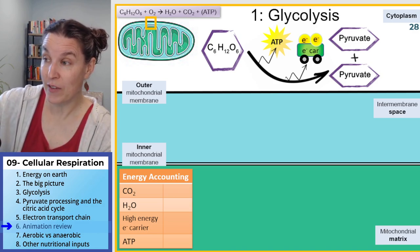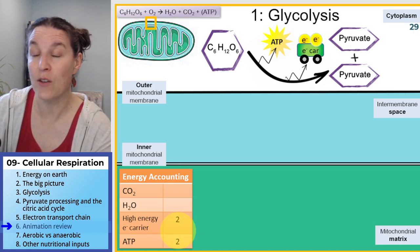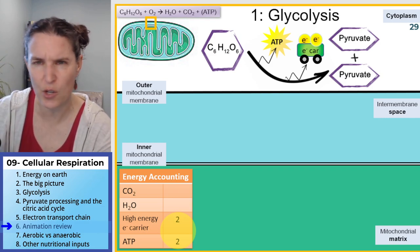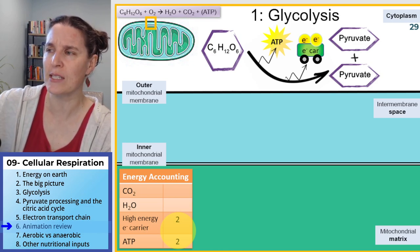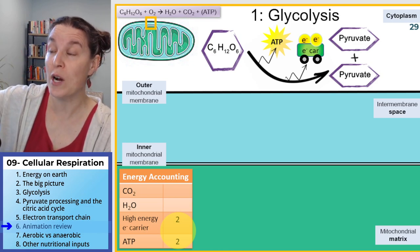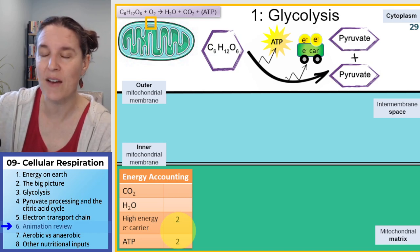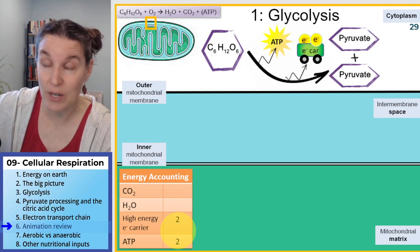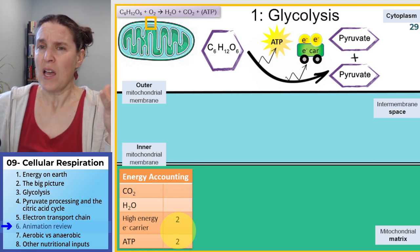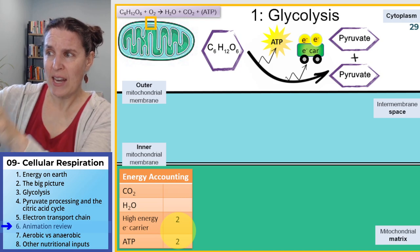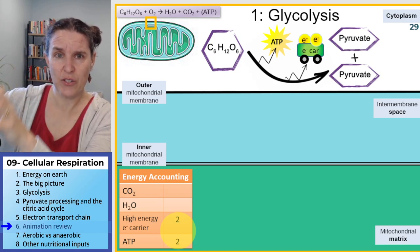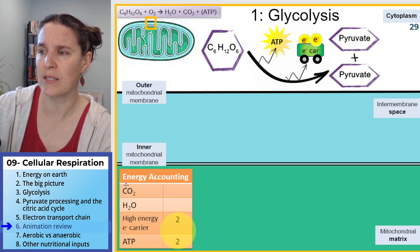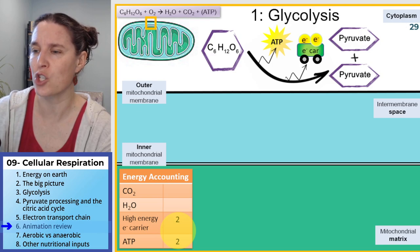We go through the process of glycolysis, and what you see now is everything we got out of it: two pyruvate molecules, two electron carriers, and two ATPs. We're keeping track of them in this energy accounting chart.